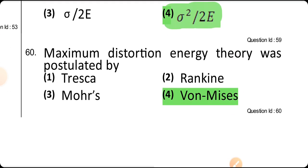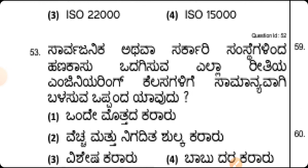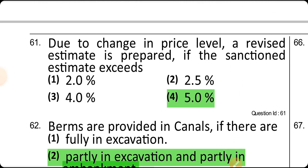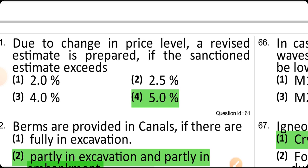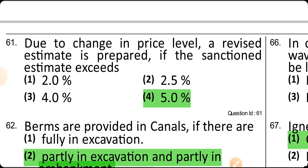The maximum distortion energy theory was proposed by von Mises. Due to a change in price level, the revised estimate is prepared if the sanctioned estimate exceeds 5%.